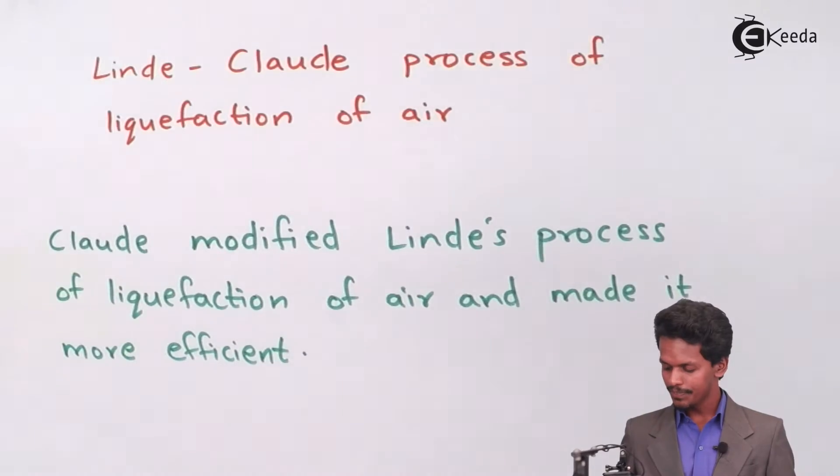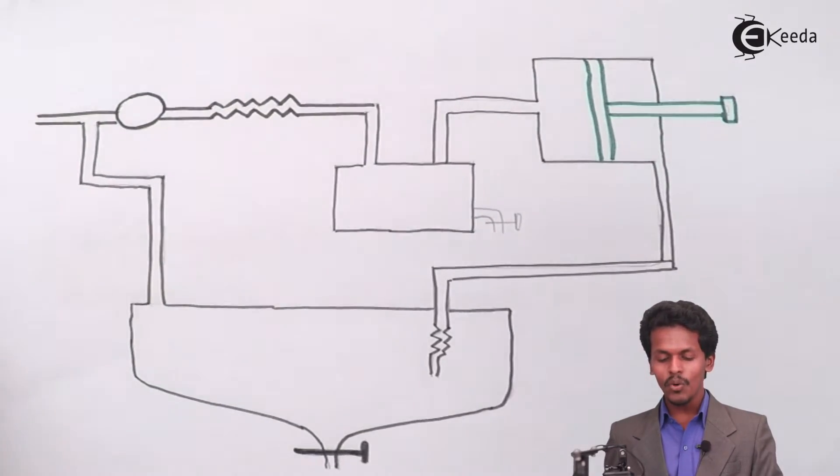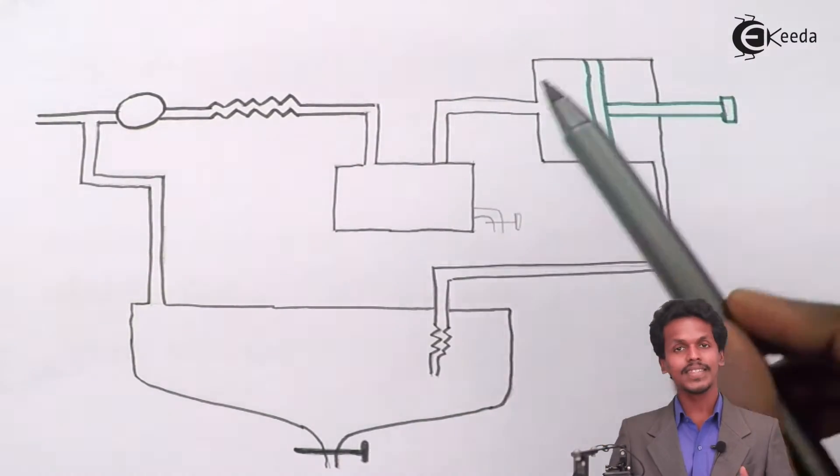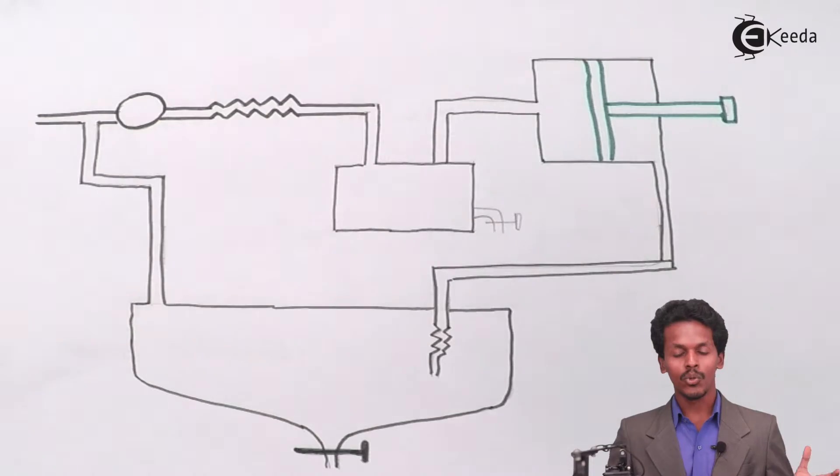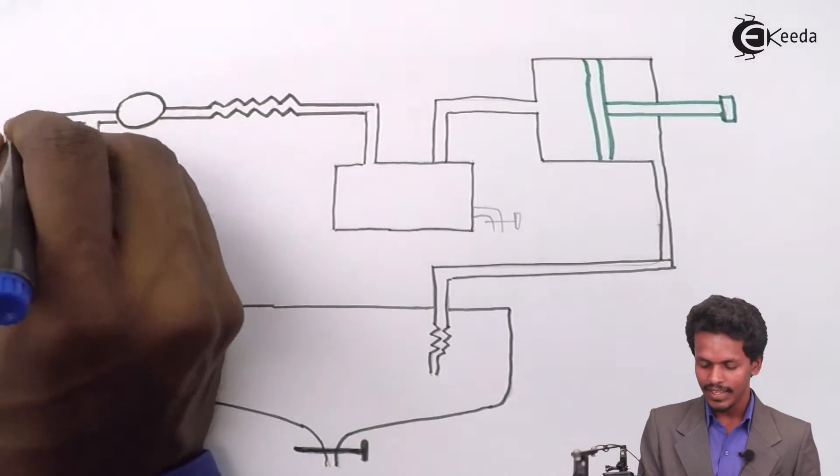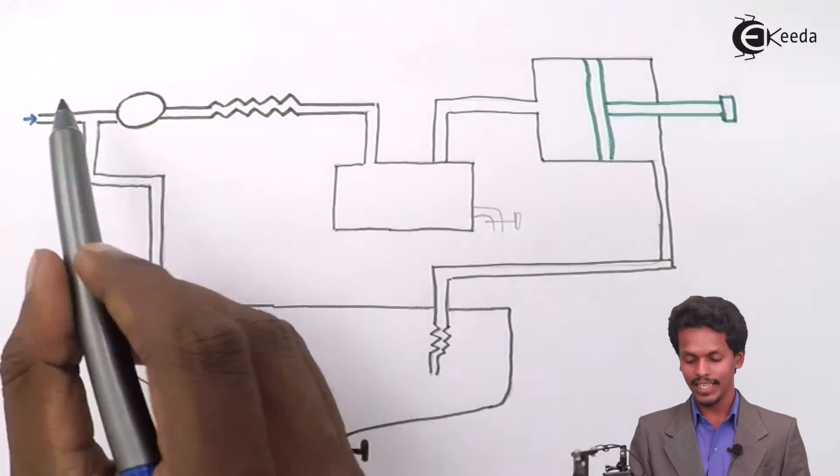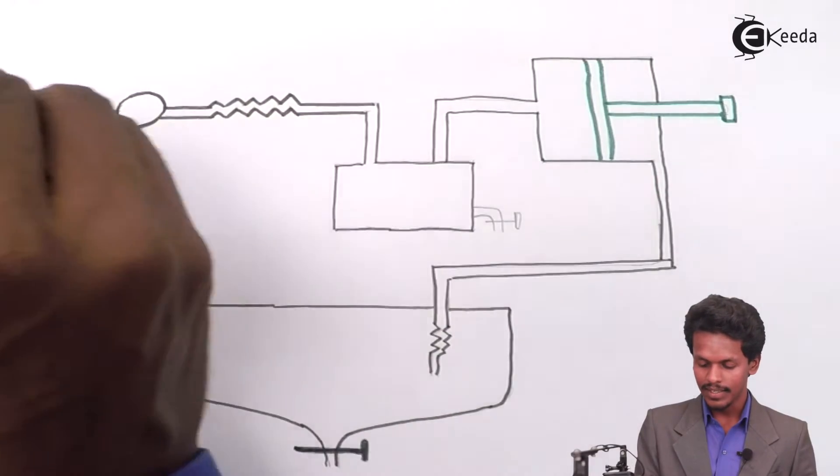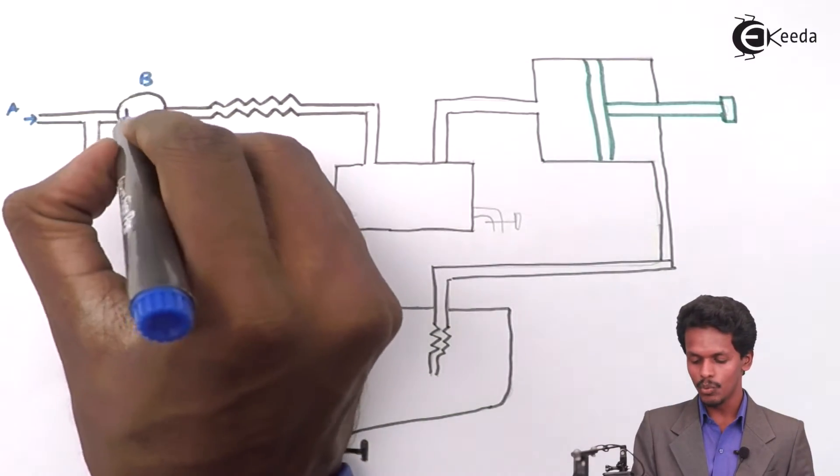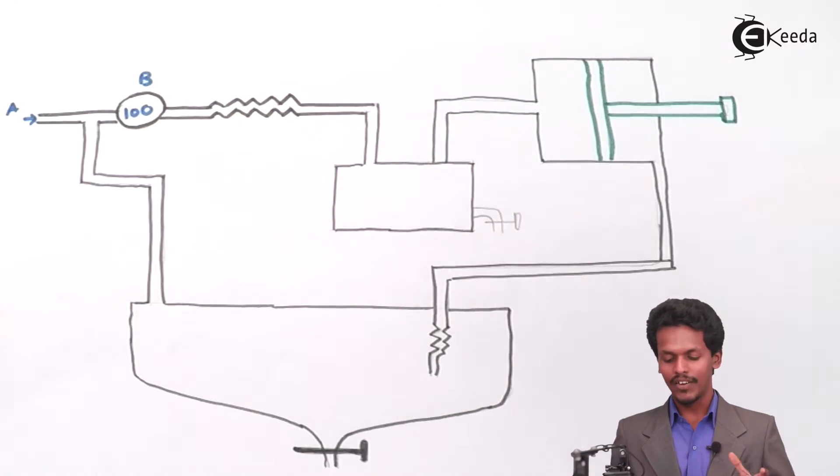For that instance, the diagram would be almost the same as I have made earlier. But there would be small modification here. So what is that modification? Let us learn throughout this diagram. This diagram consists of inlet A. This is the inlet of air that will pass. B will be the pump, again more than 100 atmospheric pressure. It will pull the air towards inside.